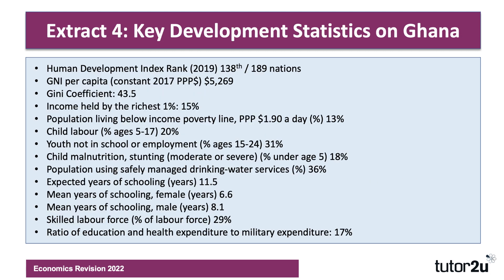Extract four provides copious data on the Ghanaian economy in context of the Human Development Index, education, healthcare, incomes, and inequality. Ghana ranks 138th out of 189 nations. Per capita income is just over $5,000 adjusted for PPP. The Gini coefficient is a fairly high 43.5, with 15% of income held by the richest 1%. Some 13% of people live below the extreme poverty line, and 31% of young people aged 15 to 24 are not in school or employment. There's a big gap between expected years of schooling and mean years of schooling, with a gap between females and males. Only 29% of the labour force is skilled, and the ratio of education and healthcare spending to military spending is just 17% — meaning military spending is over five times higher than education and healthcare spending.